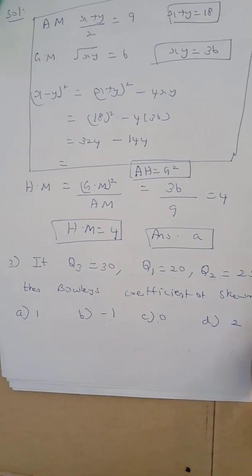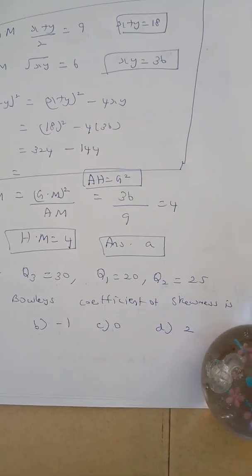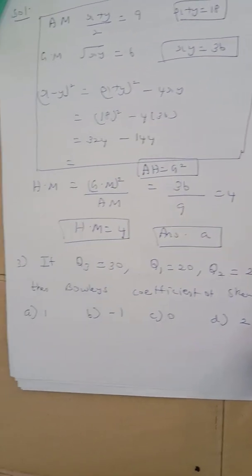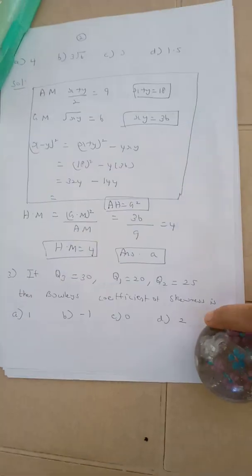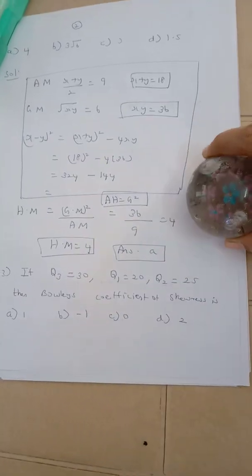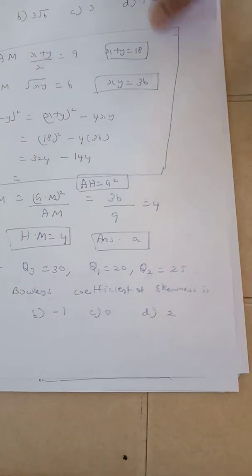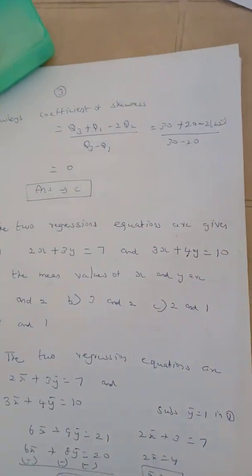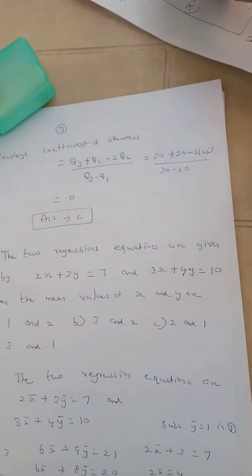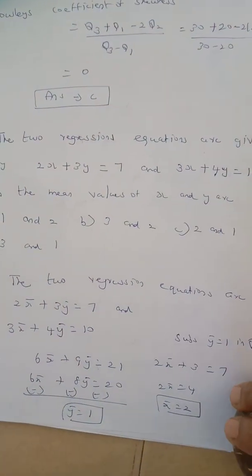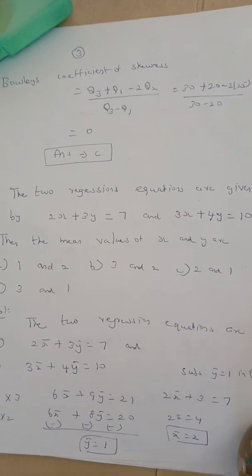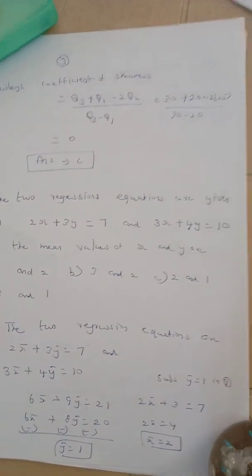Question number 3. If Q3 is equal to 30, Q1 is equal to 20, and Q2 is equal to 25, then Bowley's coefficient of skewness. The formula is Q3 plus Q1 minus 2Q2, divided by Q3 minus Q1. Substituting values, Bowley's coefficient of skewness is equal to 0. The correct answer is option C.